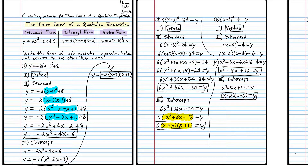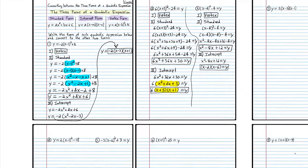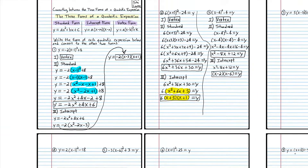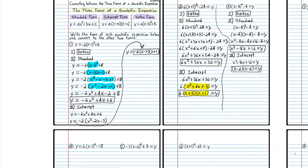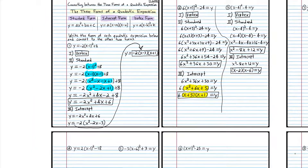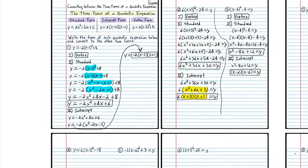Again: we identified the form as vertex form, converted from vertex form to standard form, then from standard form to intercept form. I'm going to leave those three problems in the window and I want you to try number 4. When you come back, we'll do it together.